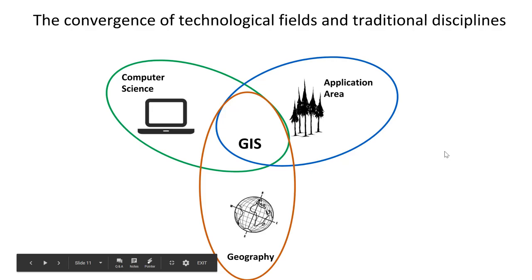GIS is really the convergence of three different technological fields and traditional disciplines. On one hand we're dealing with computer science, on the other hand we're dealing with geography, and lastly we're also looking at our application area. We're trying to combine these three technological fields and traditional disciplines using GIS. All three of these things we need to consider when we're working with GIS.